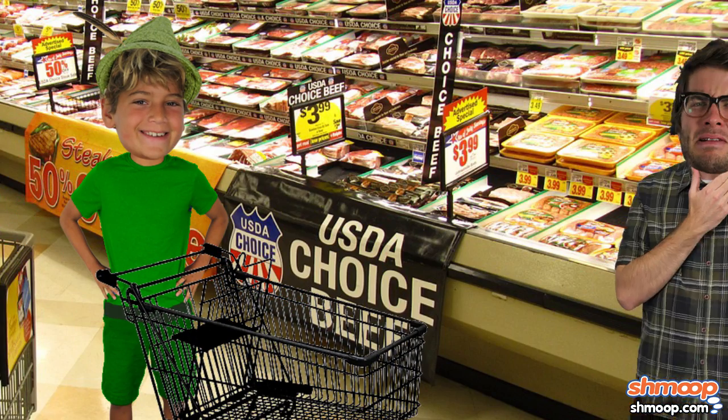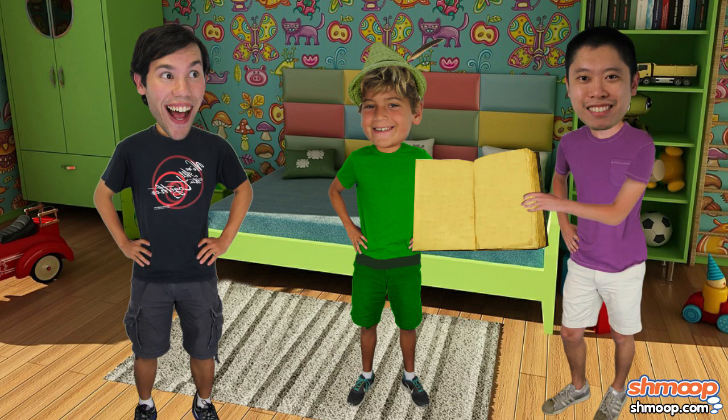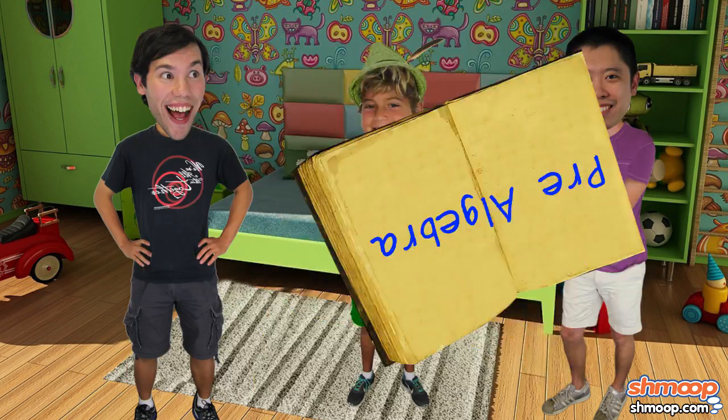But he doesn't just want a replacement, he's in the market for something bigger and better. Michael and John have been introducing Peter to a little pre-algebra, and Peter decides he can pick out his new shadow by using the Pythagorean Theorem.